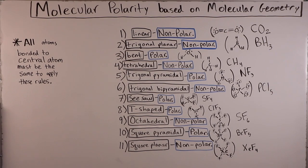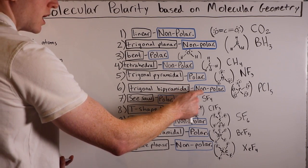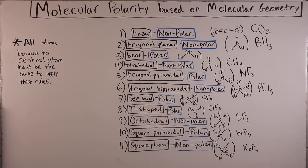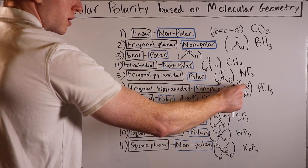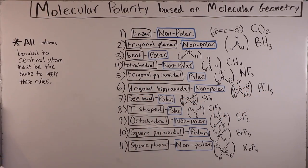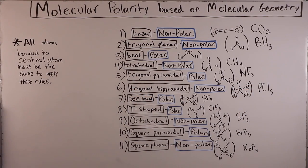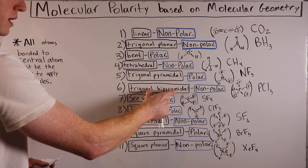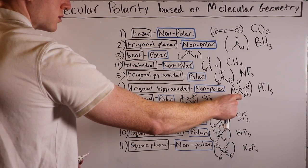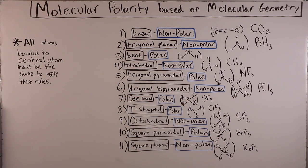Trigonal bipyramidal is a nonpolar molecular geometry. All the phosphorus–chlorine bonds in PCl₅, for example, perfectly cancel each other out in geometric space. So even though there are polar bonds present, they all cancel each other out. See the VSEPR video to understand how this trigonal bipyramidal geometry leads to geometric cancellation.